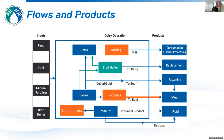This slide is a simplified cartoon where inputs are shown to the left and the activities on the dairy operation itself shown in the blue box in the center. The color coding is intended to show the stages we would like to take in performing an allocation.